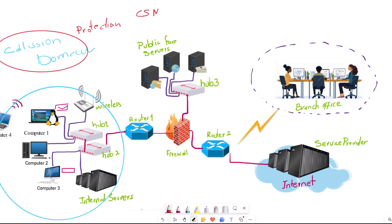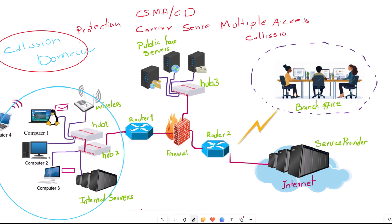To protect against collisions on the network, the first method was CSMA/CD, or Carrier Sense Multiple Access with Collision Detection. By using CSMA/CD, it only detects the collision after it occurs over the network, then sends a message to all network devices to stop sending data until the network is free.